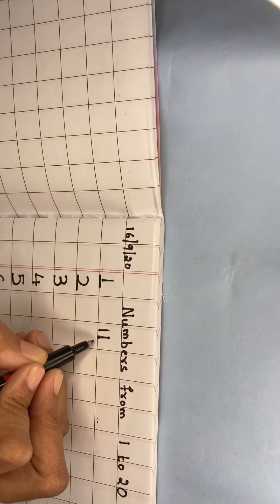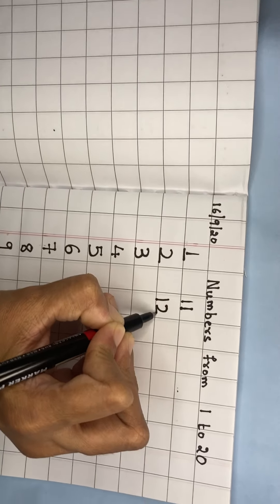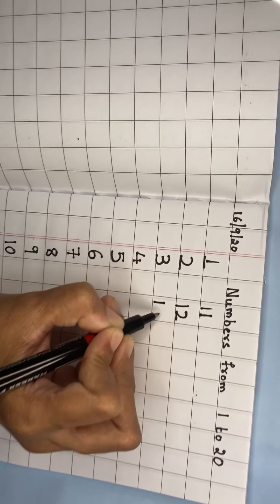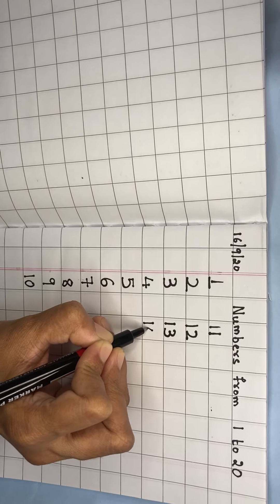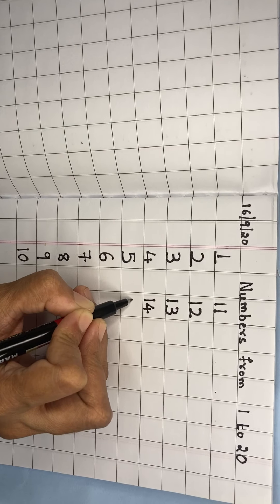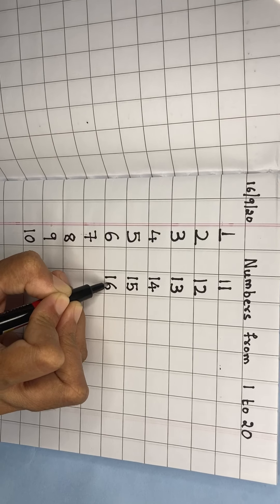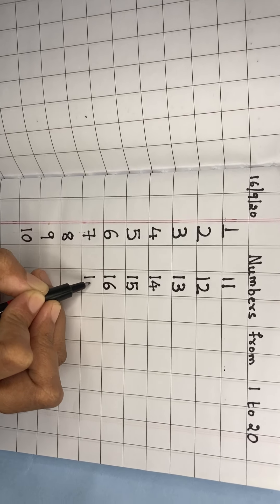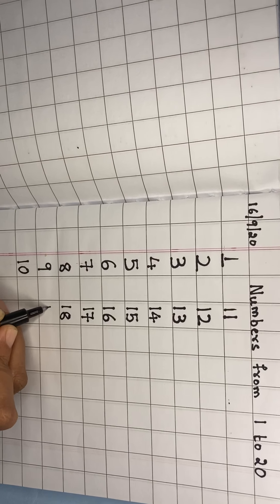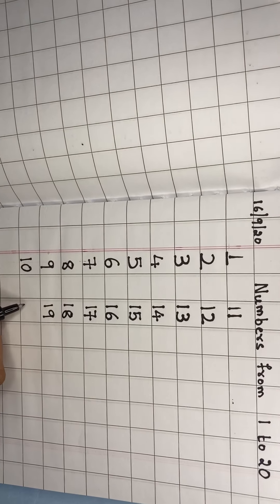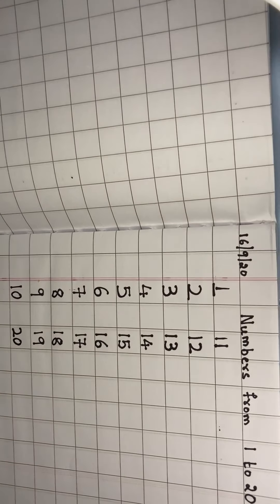One, one is 11. Next, one and two is 12. One and three is 13. One and four is 14. One and five is 15. One and six is 16. One and seven is 17. One and eight is 18. One and nine is 19. And two and zero is 20.